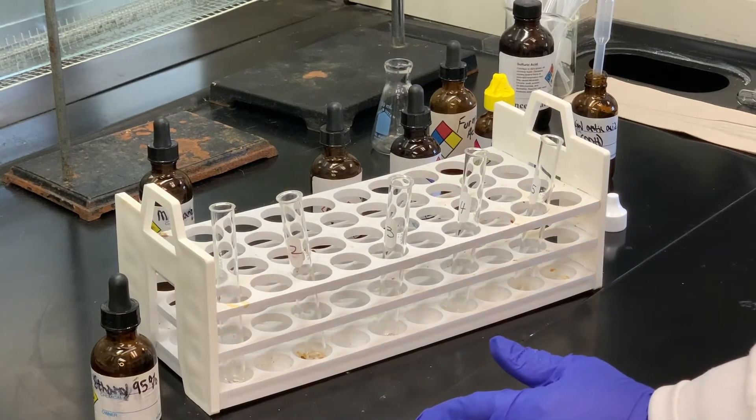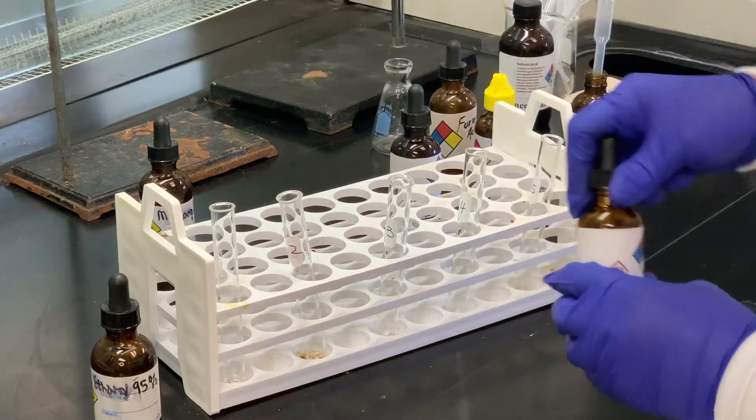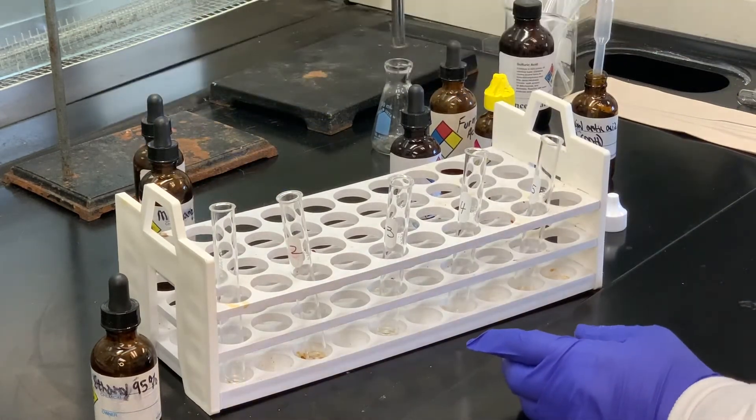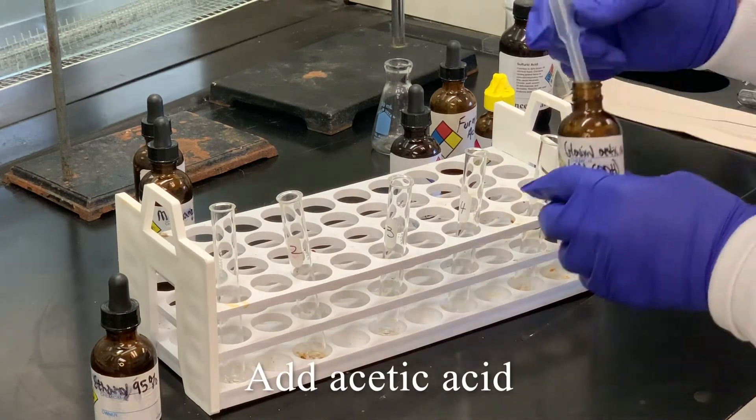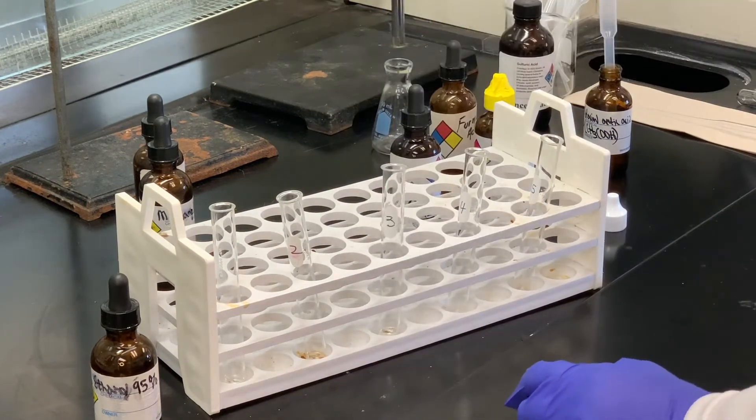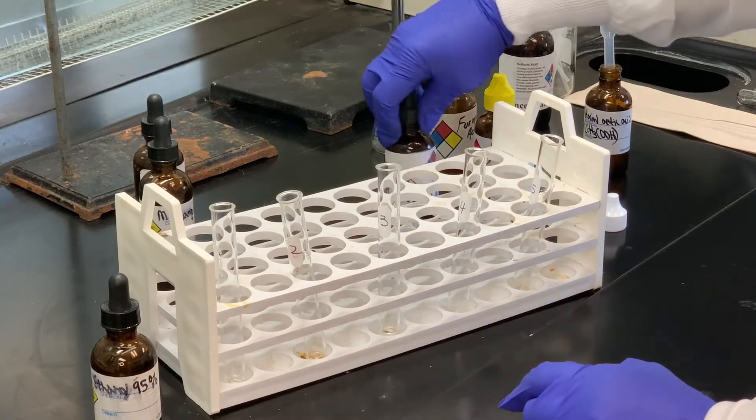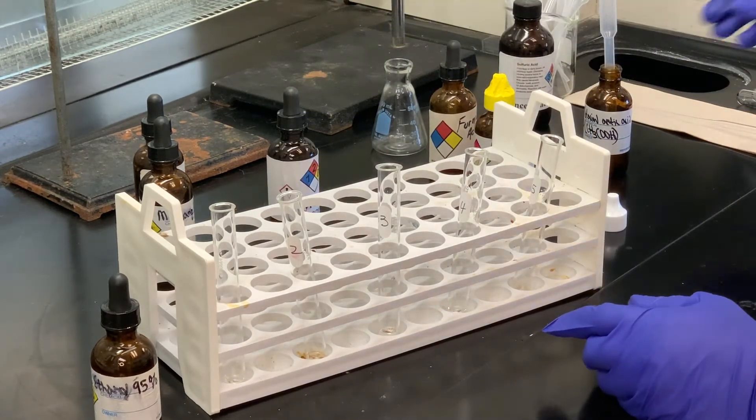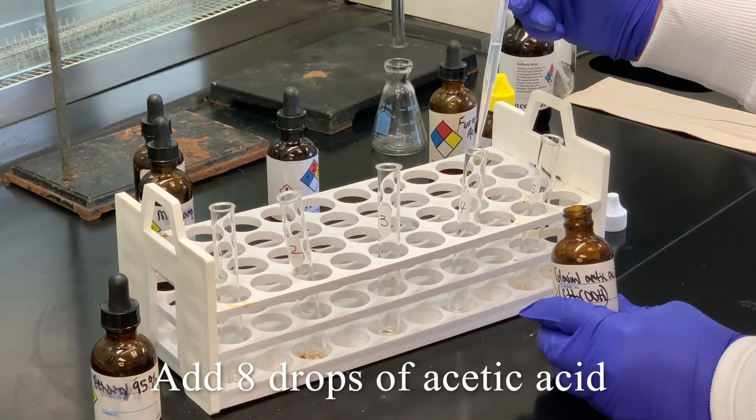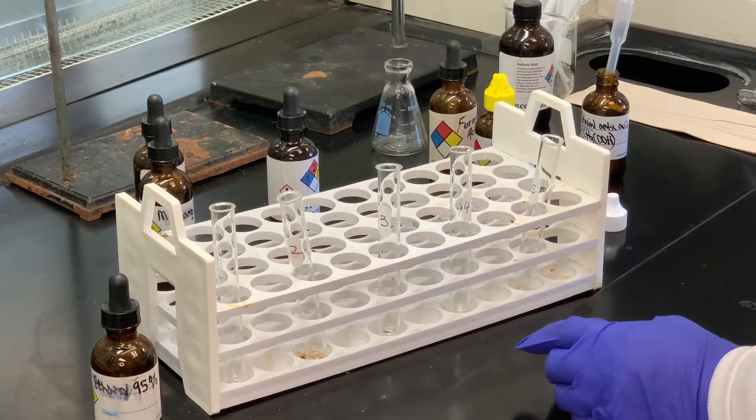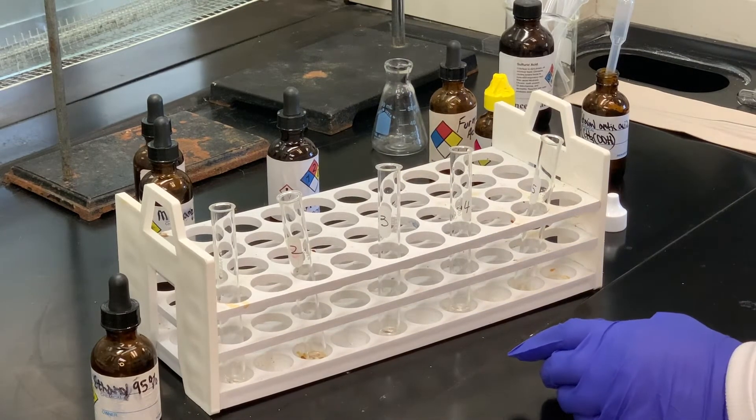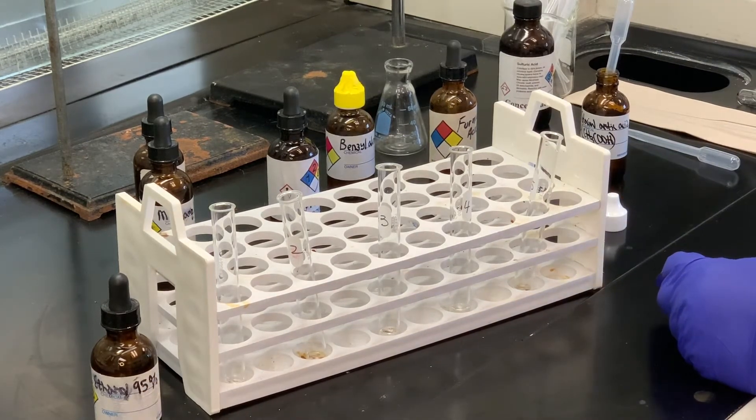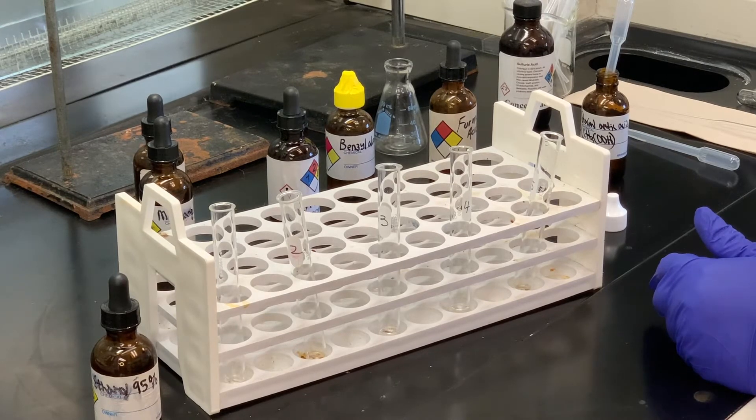In the third test tube, we're using 20 drops of isoamyl alcohol. And to that, we're going to add 10 drops of acetic acid. In the fourth test tube, we're going to use 20 drops of octyl alcohol and also 8 drops of acetic acid. And in the last test tube, we're going to use 9 drops of benzyl alcohol. And to that, we're going to add 10 drops of formic acid.